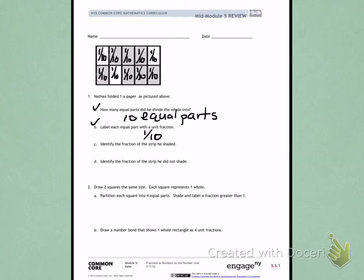Letter C. Identify the fraction of the strip he shaded. I can see that there is 1, 2... I should count by fractions: 1 tenth, 2 tenths, 3 tenths, 4 tenths, 5 tenths, 6 tenths, 7 tenths that are shaded.